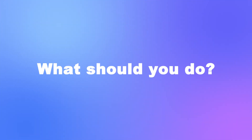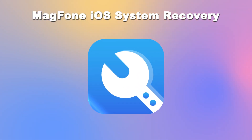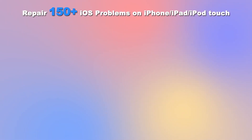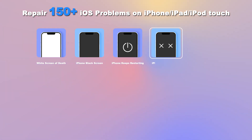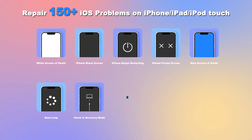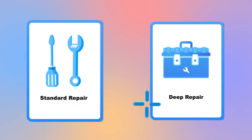If you have a system problem with your iPhone, iPad, or iPod Touch, what should you do? Don't fret — Magphone iOS System Recovery can quickly get your device back to normal. It can fix more than 150 iOS issues: white screen of death, iPhone black screen, iPhone keeps restarting, frozen screen, blue screen of death, boot loop, stuck in recovery mode, DFU mode, white Apple logo, and failure to update iOS.